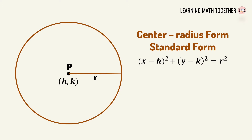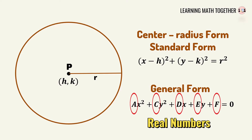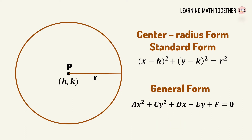This time we will discuss the general equation, or the general form, of the equation of a circle. It is in the form ax squared plus cy squared plus dx plus ey plus f equals zero. Take note that a, c, d, e, and f are all real numbers, and I will teach you how to rewrite from general form to standard form.